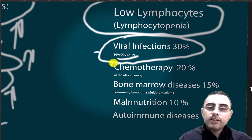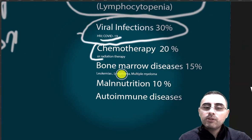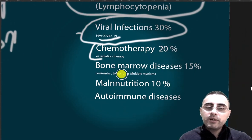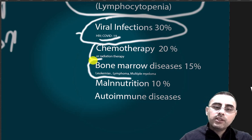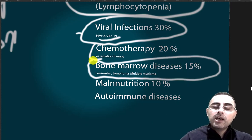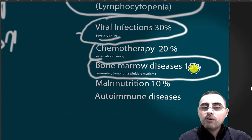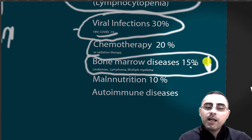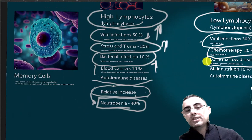Chemotherapy and radiation therapy can decrease lymphocyte levels. Bone marrow diseases are also an important cause, including leukemia, lymphomas, multiple myeloma, and aplastic anemia. Malnutrition and autoimmune diseases can also cause low lymphocyte levels.